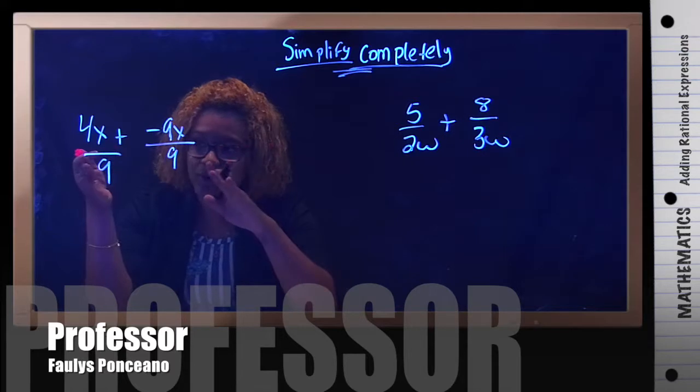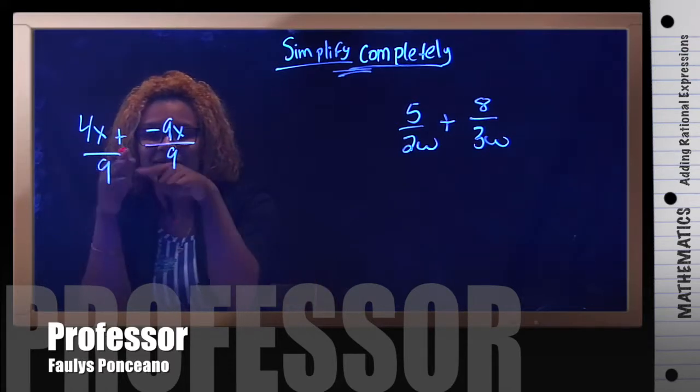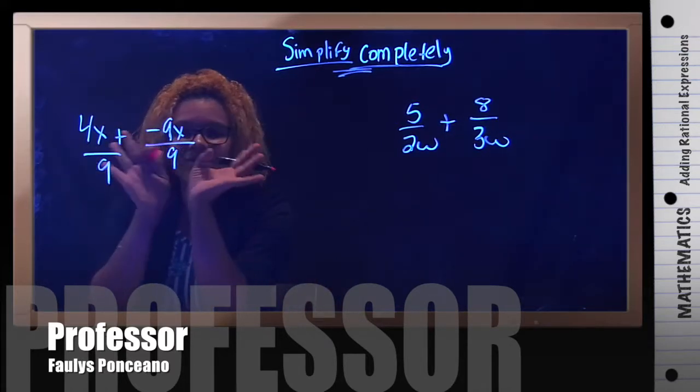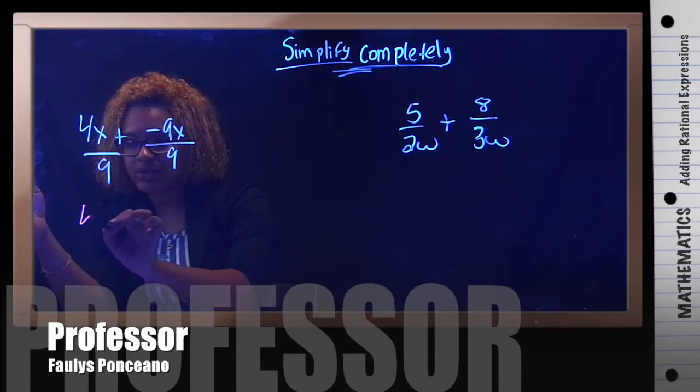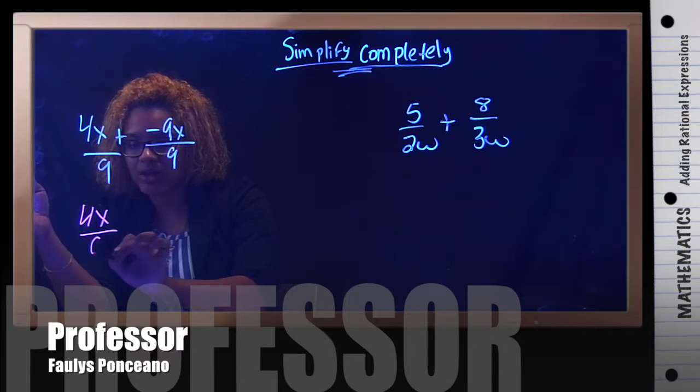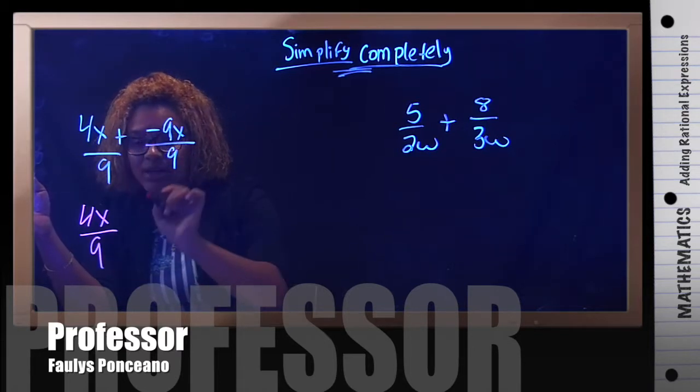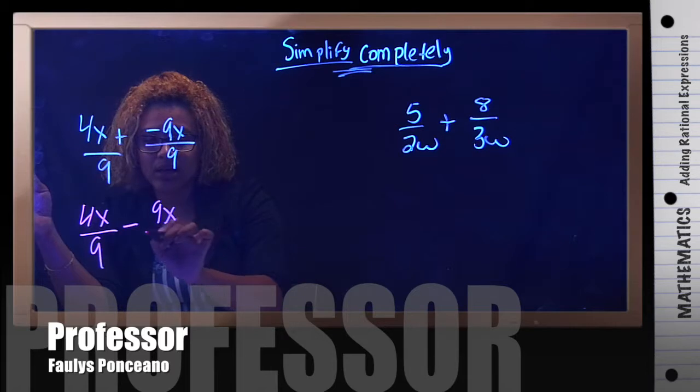So for the first one, we're going to first simplify the signs, because I have this positive and this negative, and that's just too many signs. I only need one. So I'm going to rewrite it as 4x over 9, positive times a negative, say negative 9x over 9.